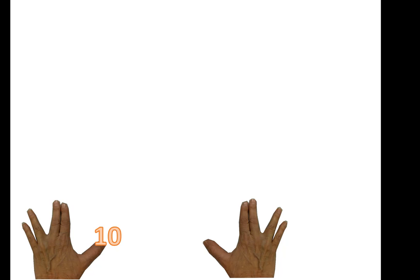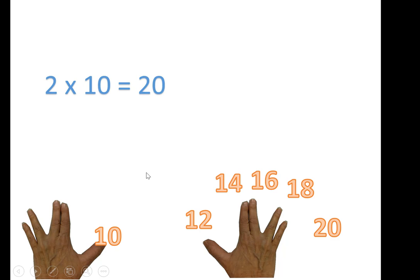And finally, we could just say ten, twenty, and count by tens. Or ten, twelve, fourteen, sixteen, eighteen, twenty. Two times ten is twenty.